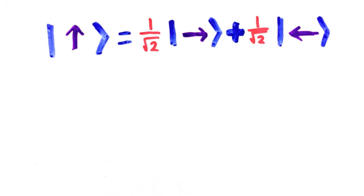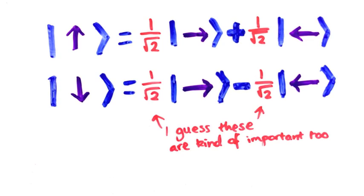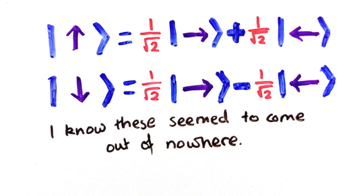In our case, up equals right plus left, and down equals right minus left. I'll explain what motivates these conversions when I do some real examples, but back to this toy one.